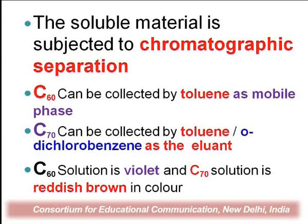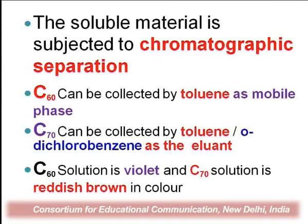The soluble material is subjected to chromatographic separation. C60 can be collected using chromatographic separation, again using toluene as a mobile phase. C70 is also collected using toluene or dichlorobenzene as the eluent. C60 forms a violet color and C70 forms a reddish color when mixed into the solvent toluene or benzene.